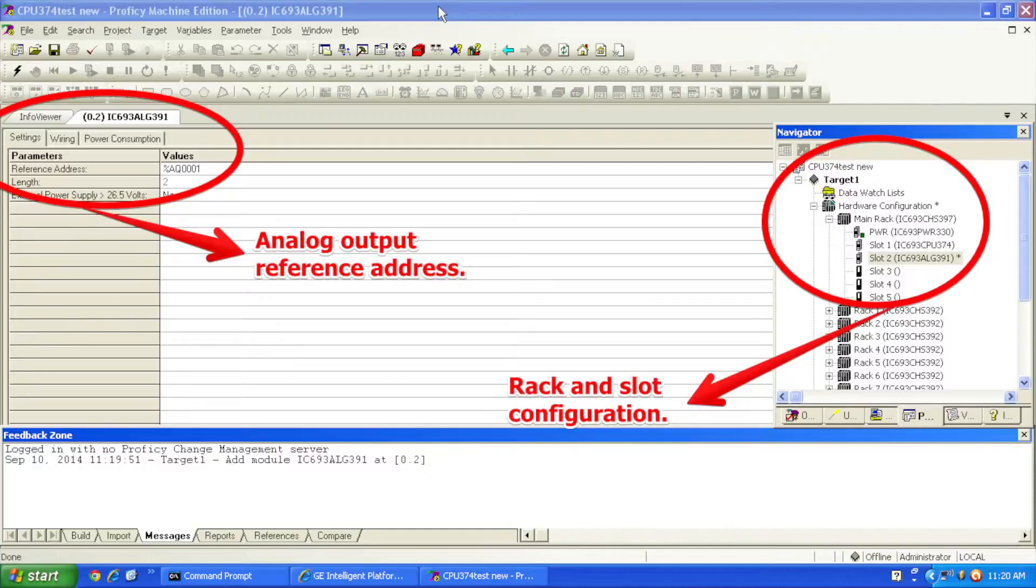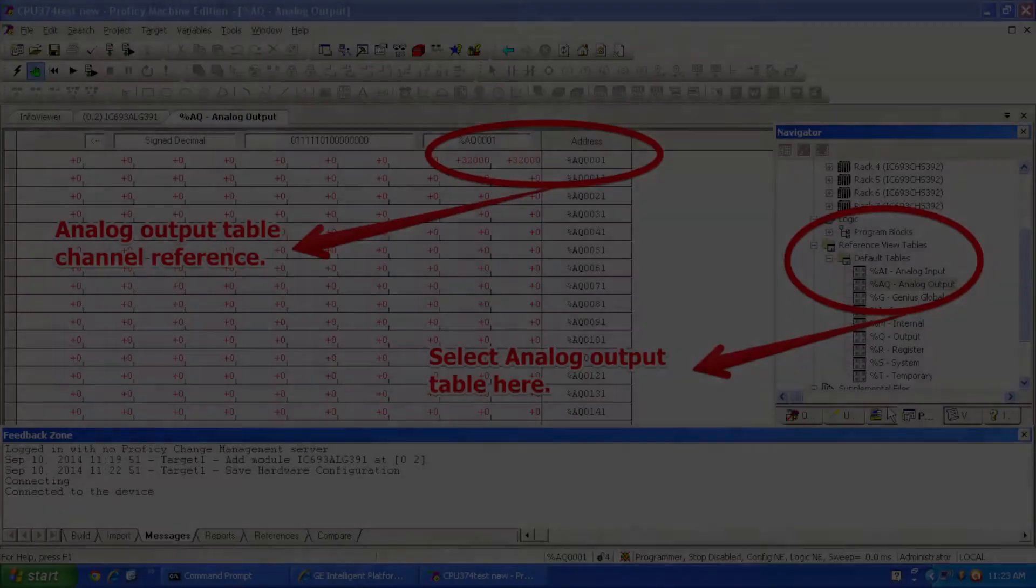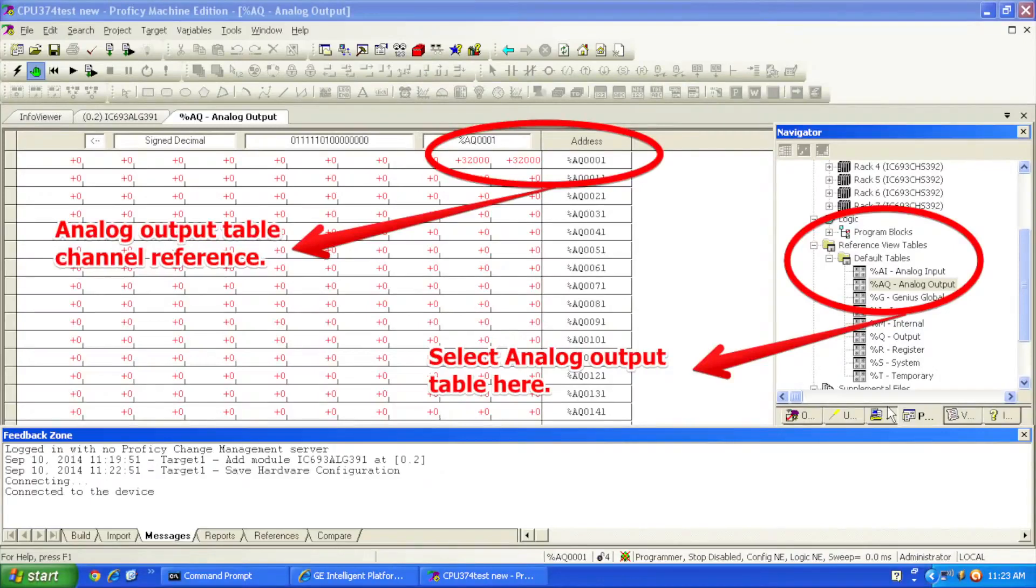All right, so I already have the processor in run mode and this is all configured and pretty much ready to go. So the next thing I want to do is to open up my analog output table. So I'll go to my navigator bar and under reference view tables, if you expand that, you'll have default tables and you can expand that and the second selection down is analog output. So that's %AQ or just analog output.